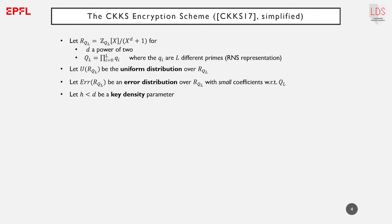We first recall the CKKS scheme, which we simplify for the sake of exposition. The ciphertext space is a polynomial quotient ring where polynomials have degree d, a power of 2, and have integer coefficients modulo q_L. q_L is a product of l different primes, q_0 to q_L, which enables representing the polynomial coefficients as their residue modulo each q_i — a residue number system thanks to the Chinese remainder theorem.